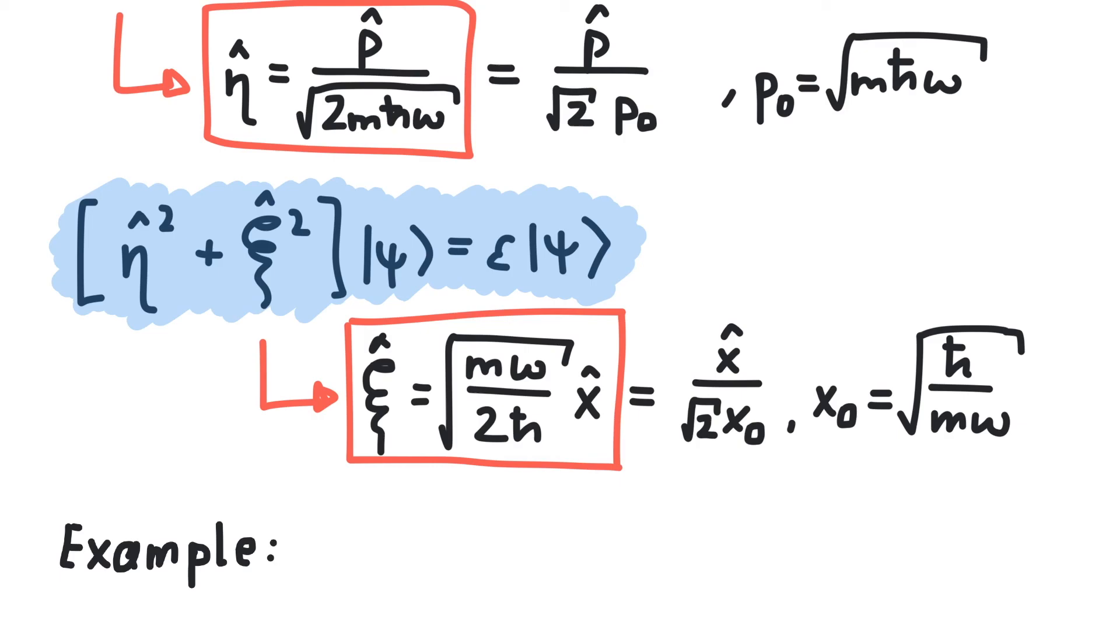For example, if we would like to know what a distance xi equal to 4 means, we use the definition of xi to see that this is equal to a distance x equals 4 times x sub 0. So let's take a look.